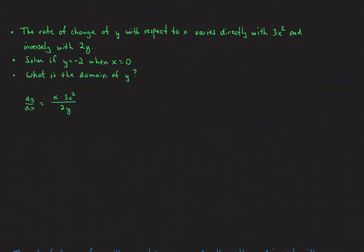Now I'm going to add a second initial condition and then we're going to try to solve and get the particular solution. So I'm going to add another initial condition: y is 9 over the square root of 2 when x equals positive 1. We're going to separate our variables — moving the 2y to the side of dy, which will make the integral easier and cleaner. The constant k stays and we multiply dx to the right side.